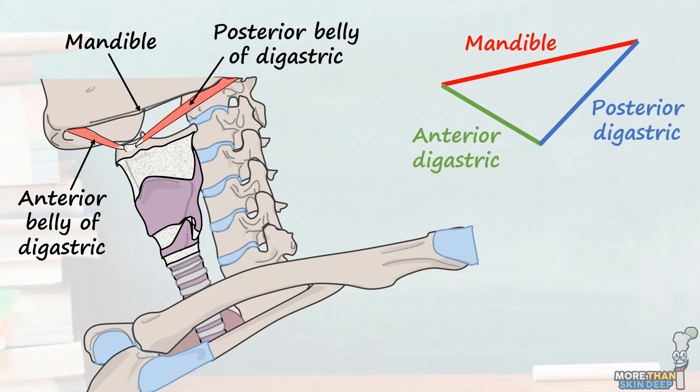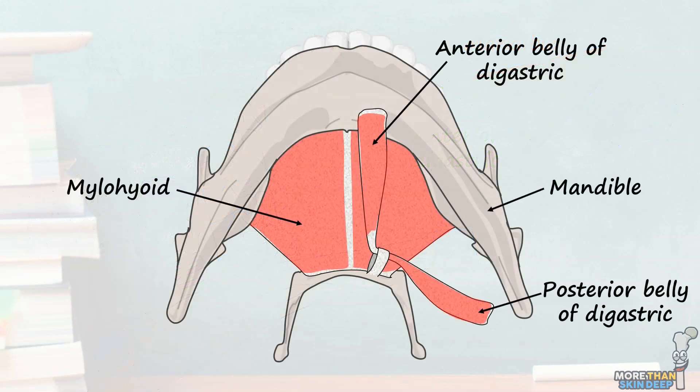The floor of the submandibular triangle is mostly composed of the myelohyoid muscle. It's easier to see the contents of the submandibular triangle from this inferior view.